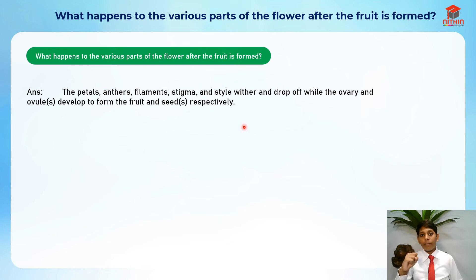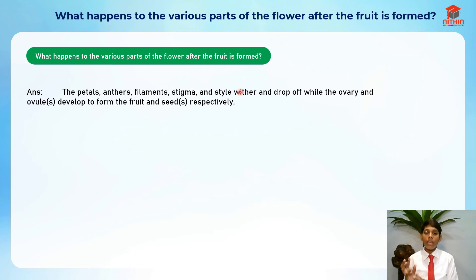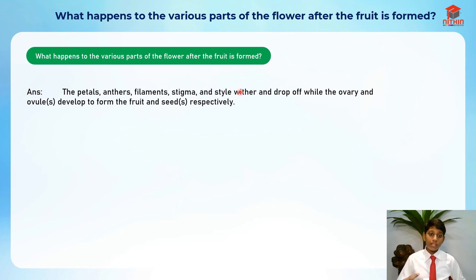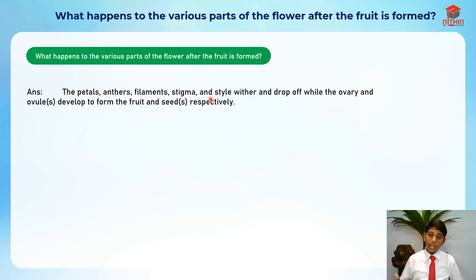One flower can actually have one fruit or many fruits. Some flowers have many ovaries, and each ovary is counted as one fruit since each ovary contains ovules inside. Some flowers have only one ovary. After pollination and fertilization, we only need the useful parts. The petals, anthers, filaments, stigma, and style wither and drop off, while the ovary and ovules develop to form the fruit and seeds respectively.